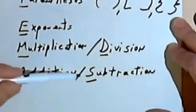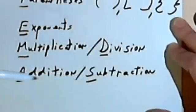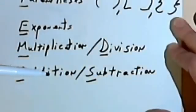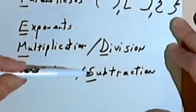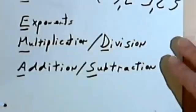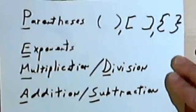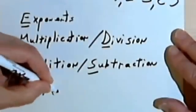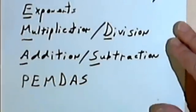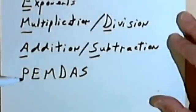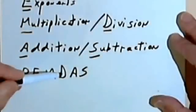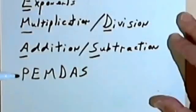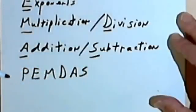The same thing happens for addition and subtraction — they're also at the same level. Going from left to right, whatever order you see them in, that's the order you're going to do your addition and subtraction in. Some people remember these as PEMDAS. Other people think of this as 'Please Excuse My Dear Aunt Sally.' However you remember them, it doesn't really matter as long as it works for you.